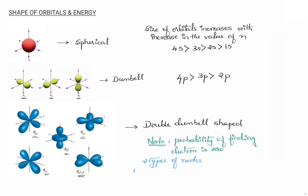The first type is the radial node, and the second is the angular node. Radial nodes are present between s orbitals, whereas angular nodes are present between p orbitals and d orbitals.